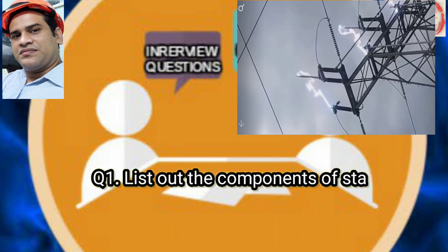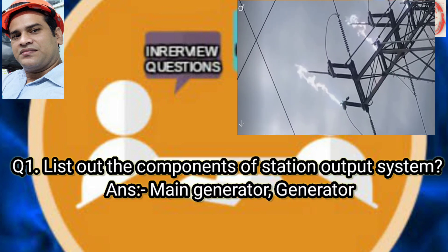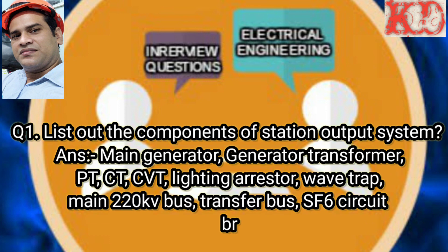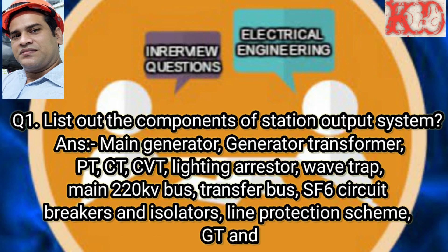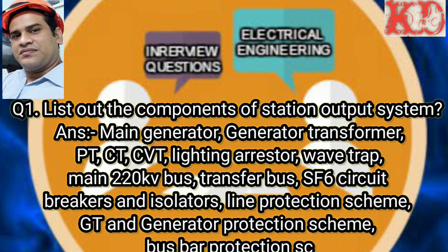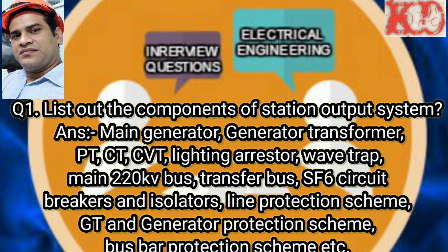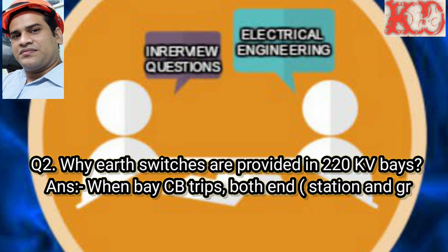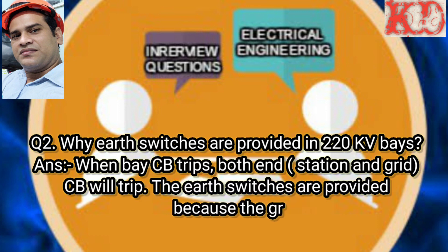Question number 1: List out the components of a station output system. Answer: The components are main generator, generator transformer, PT, CT, CVT, lightning arrester, wave trap, main 220 KV bus, transfer bus, SF6 circuit breaker and isolators, line protection scheme, GT and generator protection scheme, and bus bar protection scheme.